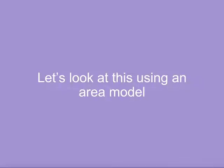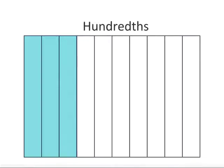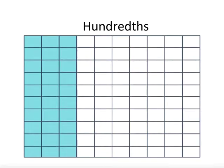Let's look at this using an area model. This shape is showing tenths. If I shade in 3 of them we can see 3 tenths. Now if I convert this into hundredths, I divide the shape into 100 equal parts. I can do this by dividing the shape into 10 rows. We can now see the 3 tenths is the same as 30 hundredths.